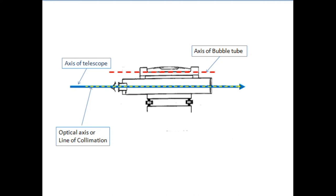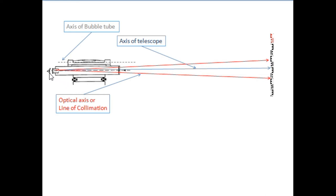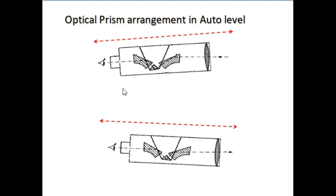Look at this figure. The axis of the telescope is horizontal and the level tube is adjusted properly, but the line of collimation is not coinciding with the axis of telescope. This will give you either more or less reading than the correct one. This is the problem associated with a telescope having collimation error, and checking for it is called a collimation check.